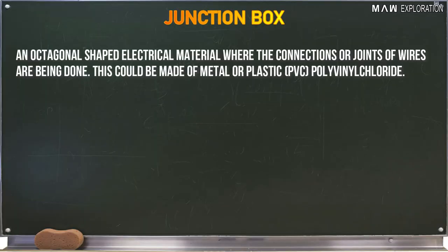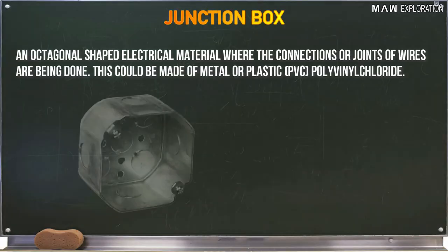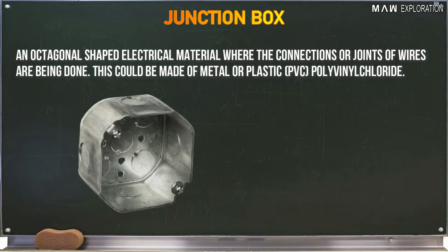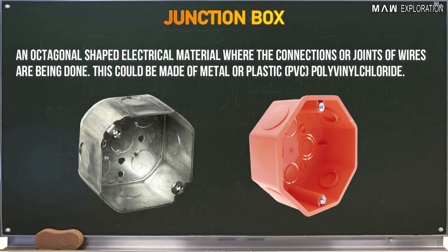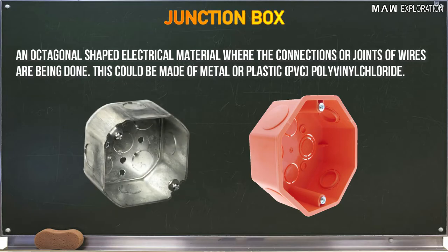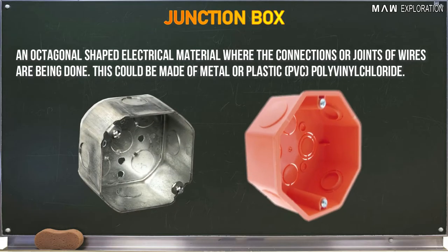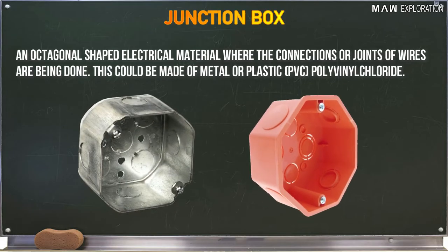Junction box is an octagonal-shaped electrical material where the connections or joints of wires are made. It could be made of metal or plastic PVC, or polyvinyl chloride.